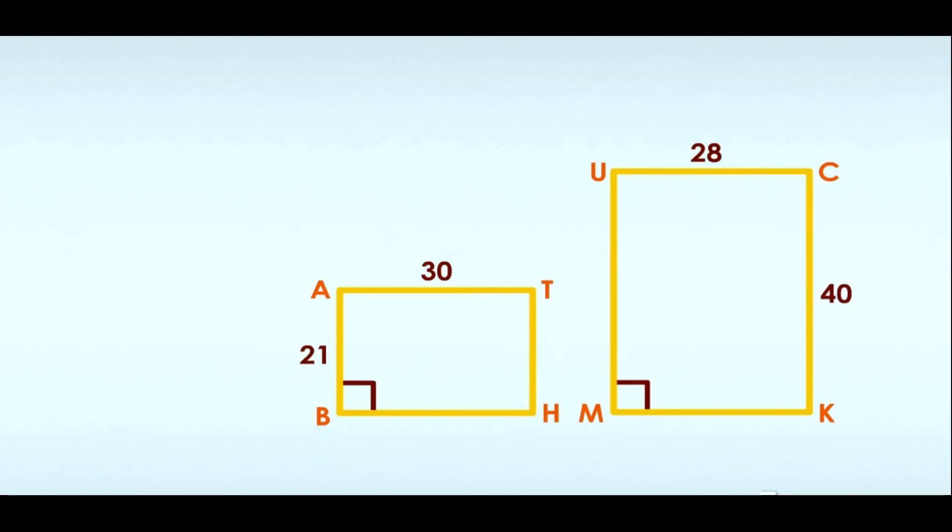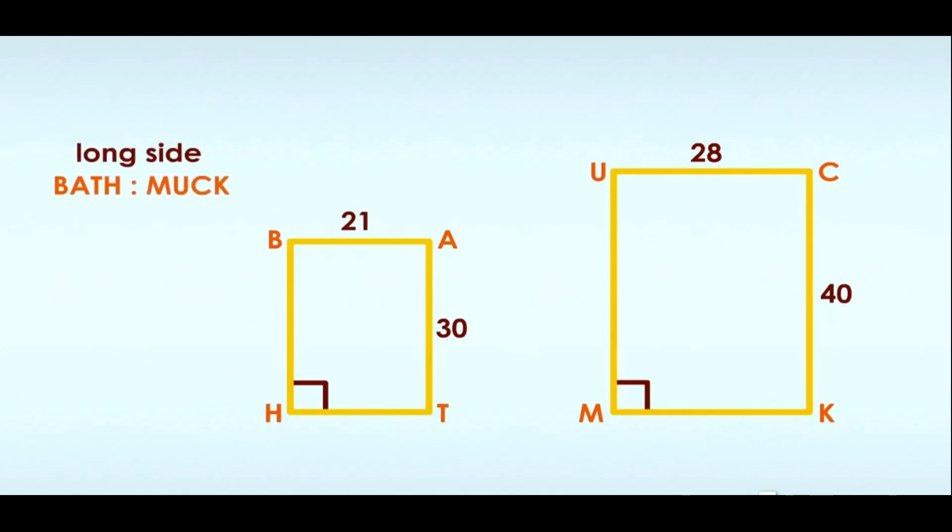If you said you would rotate and then translate the two rectangles or the other way around, then you are correct. Once you get them near each other and in the same orientation on the page, you can compare the two using corresponding parts. BATH's long side compared to MUCK's long side is 30 by 40. BATH's short side compared to MUCK's short side is 21 by 28. Are those two ratios the same? Yes, because they both simplify to 3 by 4, so the two rectangles are similar to each other.